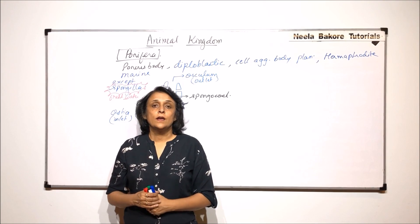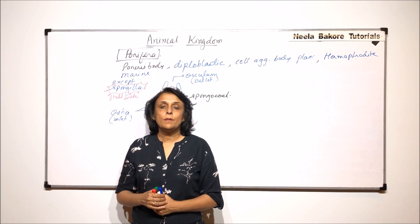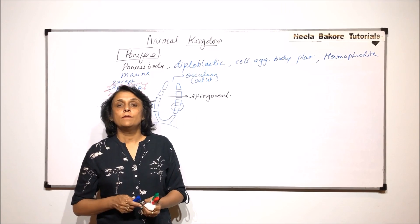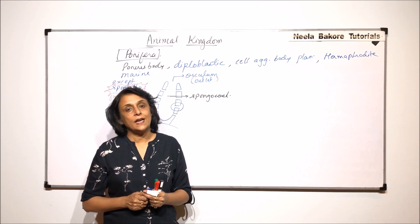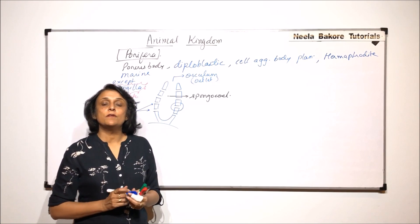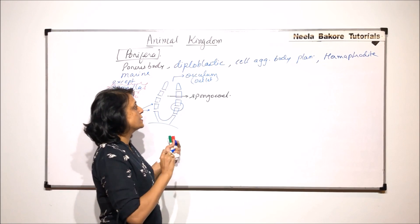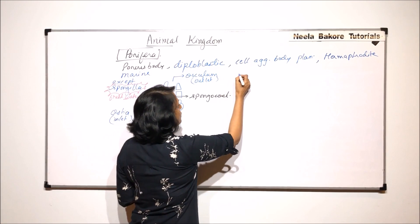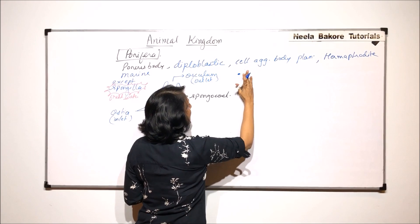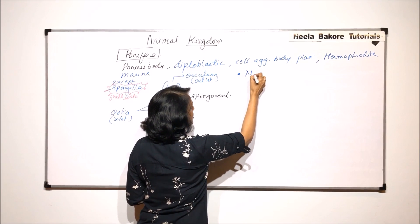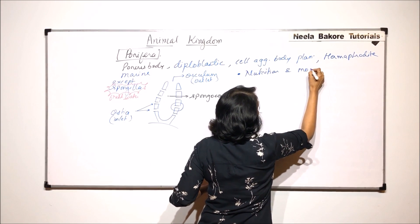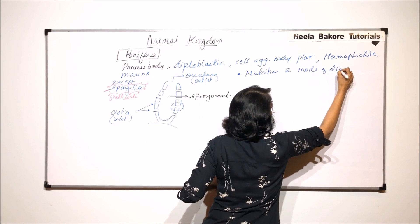In the previous part we talked about the structure of the body wall seen in case of sponges, and we also discussed the types of canal systems which we see there. Now in sponges let us talk about the various systems which they exhibit. So first is nutrition and mode of digestion.